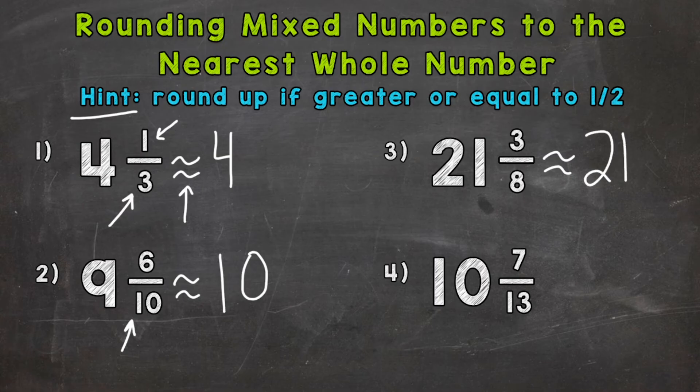And lastly, we have number four, ten and seven thirteenths. So this is an odd number. So we don't have a whole number as far as what half of 13 is. Half of 13 is six and a half. So we need to see if this numerator is greater than, equal to, or less than that six and a half. So seven is a little bit greater. So this is a little bit more than half. So we would round up. Ten and seven thirteenths rounds to 11 or is closer to 11.